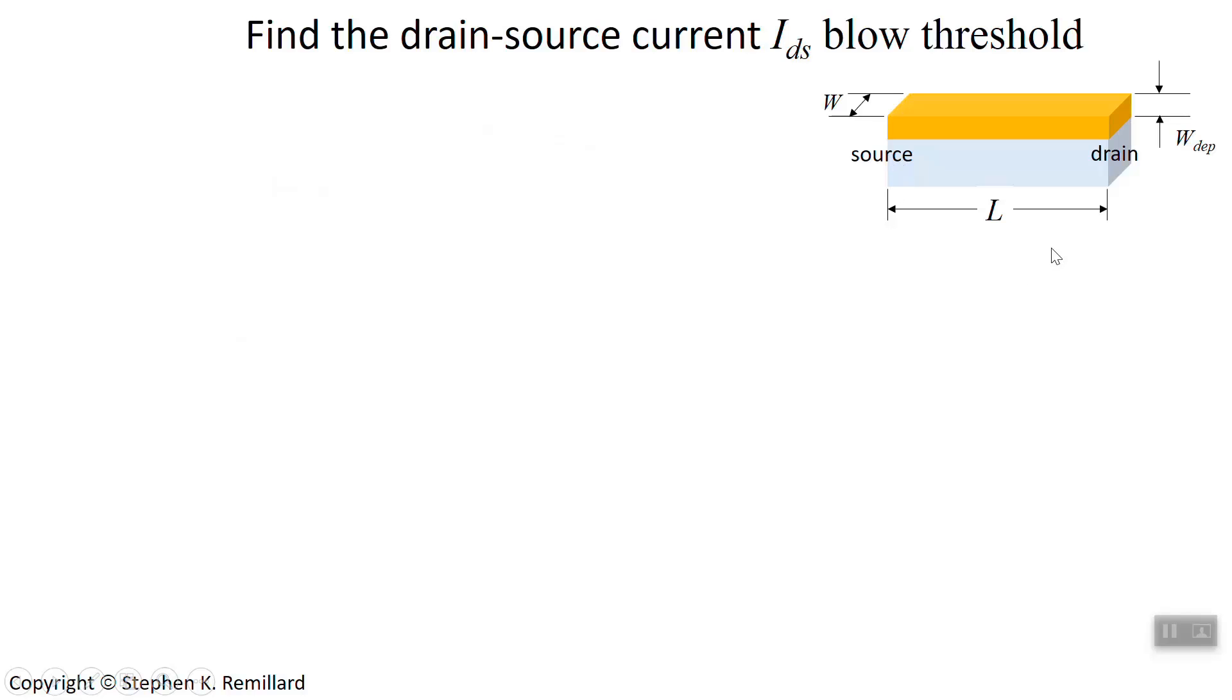So let's find an expression for the drain source current below threshold. Here's a simple model of the channel. You have the source to the left, the drain to the right, channel length of L, channel width of W, and a depletion layer of thickness W depletion. And I remind you of our expression we started with when we developed the IV model, that the drain source current, current from the drain to the source, is the width times the aerial charge distribution, Q sub n just for electrons, and V the velocity. We're going to work this out without ever having to figure out the velocity. So we'll keep it simple in that regard. The aerial charge concentration, charge per unit area, so we have Q times n sub s, which is charge per unit volume. If you multiply it by the depletion width, you have the charge per footprint, and so that's the aerial charge density.